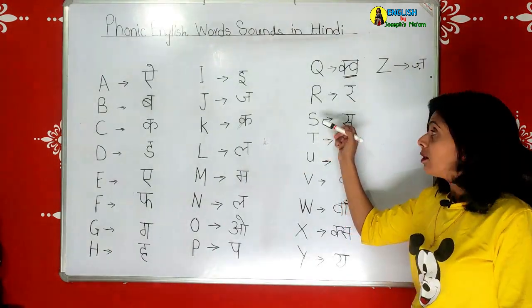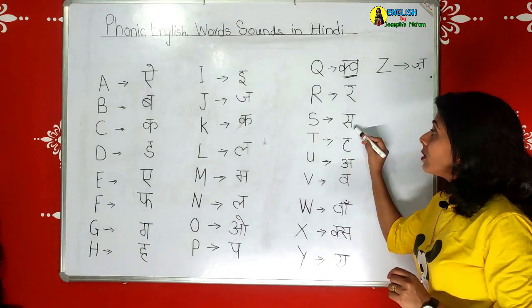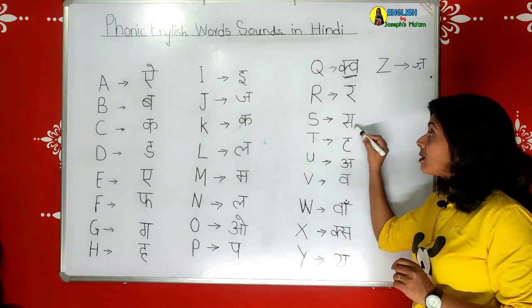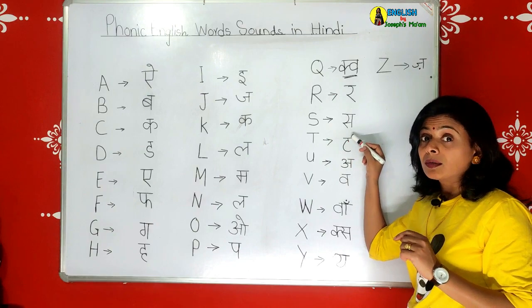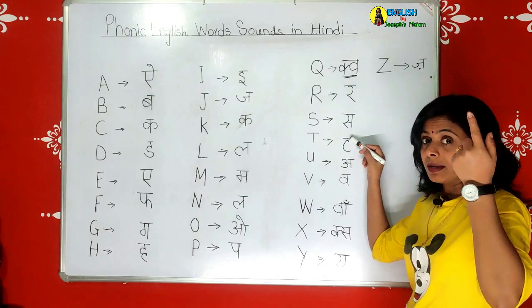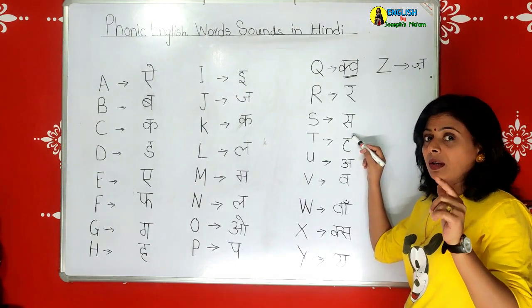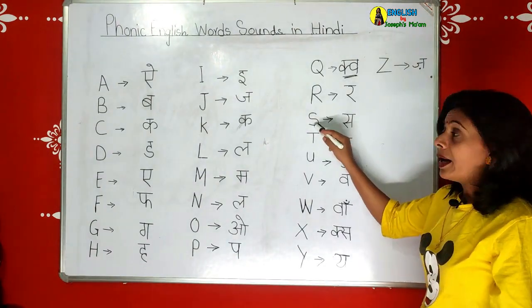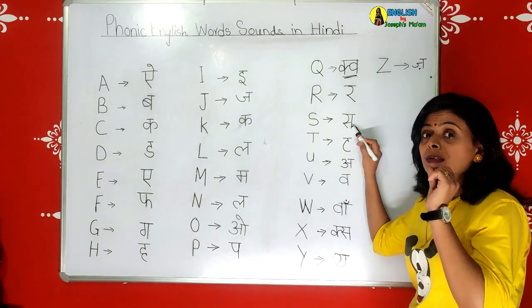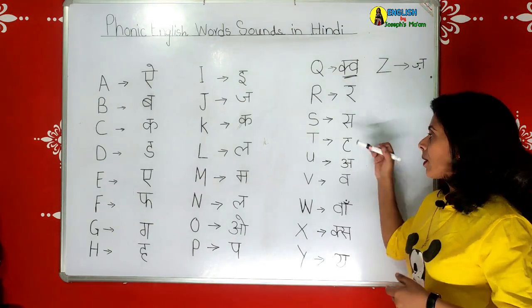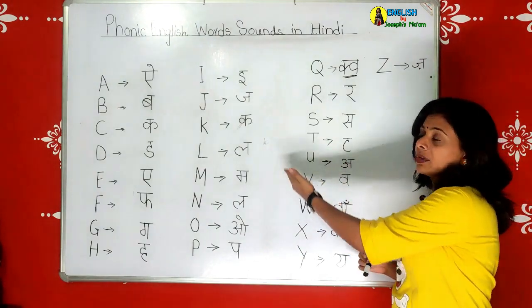The next phonic is S. The Hindi sound is 'sa'. S is for sun - sun means suraj. Another meaning of 'son' (S-O-N) is beta, which I will teach later. The Hindi phonic of S is 'sa' - the hissing sound is coming. These are very important when you speak - you have to know these phonics.